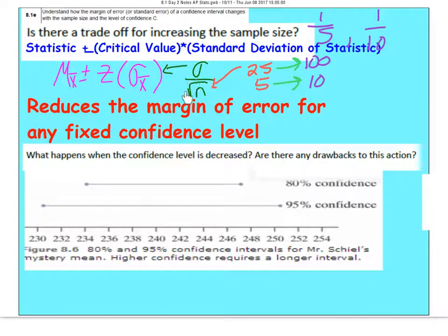So just remember, as you increase sample size, this standard deviation calculation number will go down, which will then cause this entire margin of error to go down. You're going to have less error with larger sample sizes.